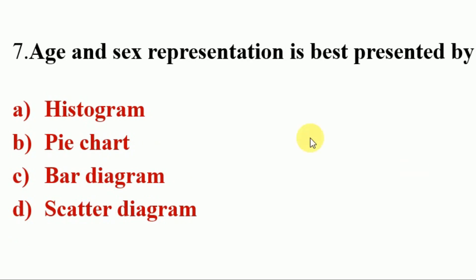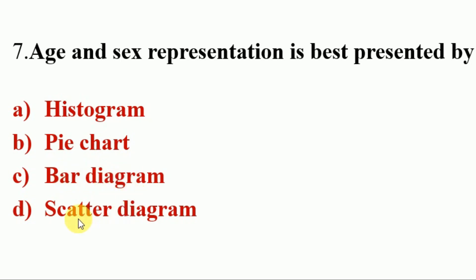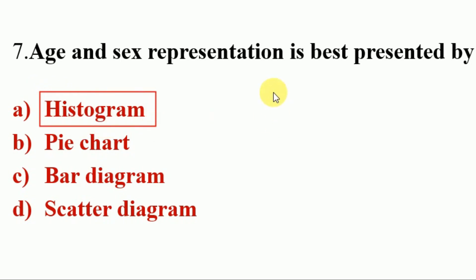Next question. Age and sex representation is best represented by — Options A. Histogram, B. Pie Chart, C. Bar Diagram, D. Scatter Diagram. Answer is A. Histogram. Age and sex representation is best presented by Histogram.